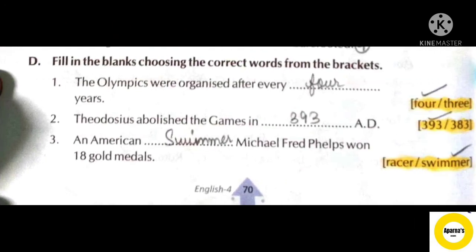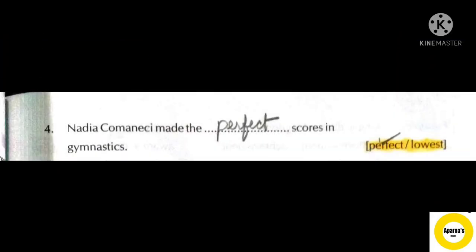Question D: Fill in the blanks choosing the correct words from the brackets. Number 1: The Olympics were organized after every four years. Number 2: Theodosius abolished the games in 393 AD. Number 3: An American swimmer Michael Phelps won 18 gold medals. Number 4: Nadia Comaneci made the perfect scores in gymnastics.